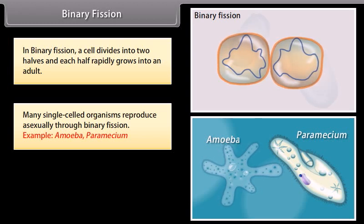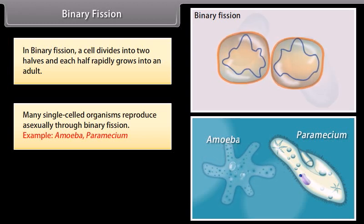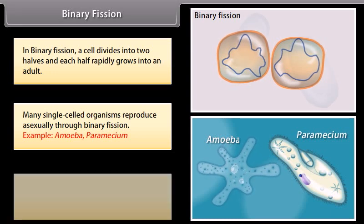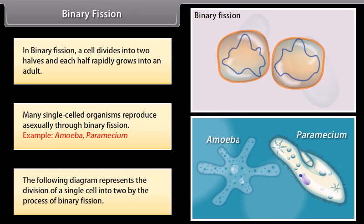Examples of binary fission include Amoeba and Paramecium. The following diagram represents the division of a single cell into two by the process of binary fission.